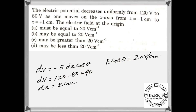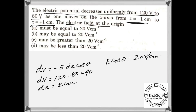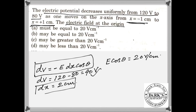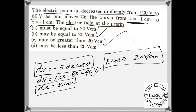Look at this problem where the electric potential decreases uniformly from 120 volts to 80 volts as you move from x equals minus 1 centimeter to x equals plus 1 centimeter. You have to find the electric field at the origin. We know dV equals minus E·dr, where dr equals dx·cos θ. dV is 40 volts (120 minus 80), and dx is 2 centimeters. So E·cos θ equals 20 volts per centimeter. If θ equals 0, E equals 20 volts per centimeter; if θ equals 60°, then E may be greater than 20 volts per centimeter.